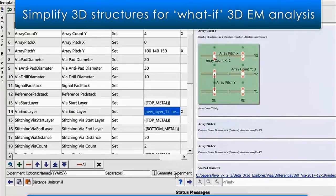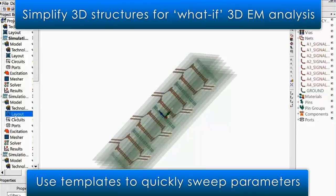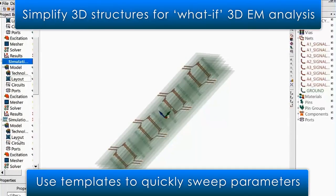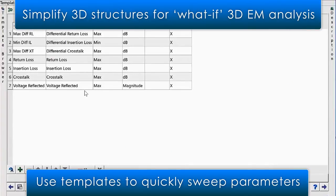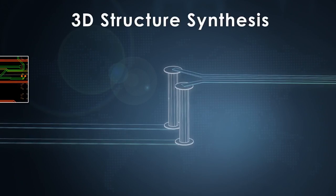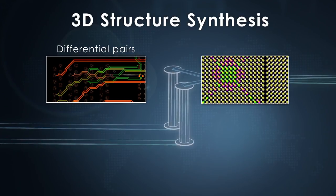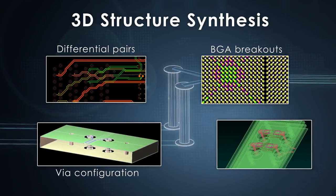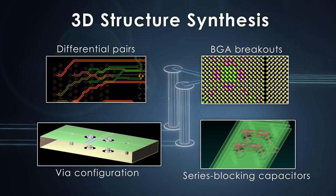This new Hyperlinks advanced solution enables users to quickly sweep the parameters of 3D structures from predefined or customized templates in a system of experiments. 3D structure synthesis can be used for differential pair, BGA breakouts, VIA configurations, series blocking capacitors, and more.